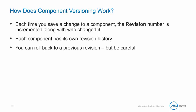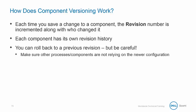AtomSphere provides the ability to roll back to a previous revision, but you need to be careful. One reason you might do this is if you change a process, a profile, or a map and make a mistake — you would roll back to before the changes were made. When rolling back, you need to make sure other processes and components are not relying on the newer configuration.